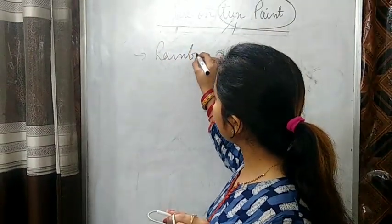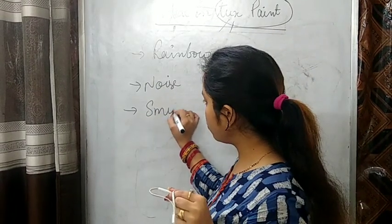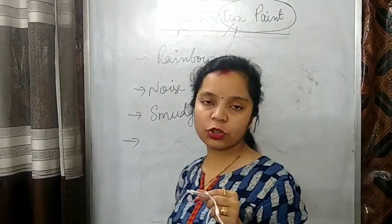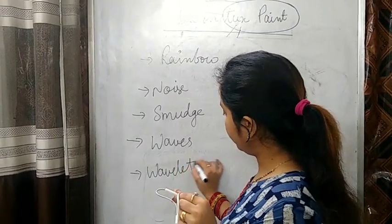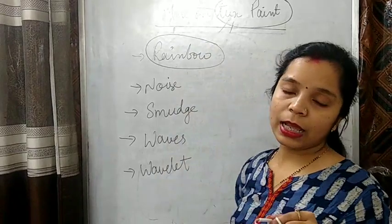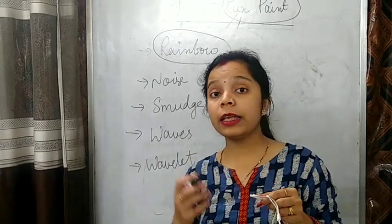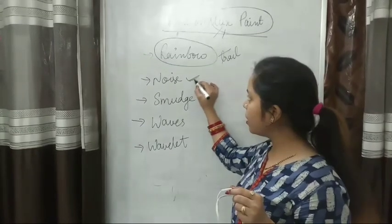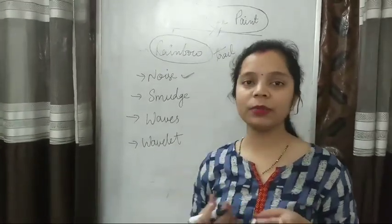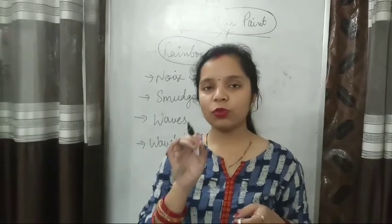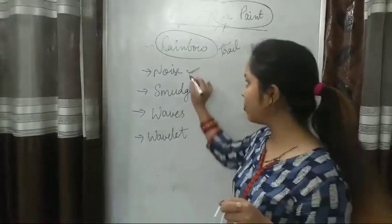Now other tools given in your book: one is rainbow tool, next one is noise tool, after that smudge tool, then waves tool, and then wavelet tool. For rainbow tool — in Tux Paint you can draw two types of rainbow: one is real rainbow drawn on the screen, and one is a trail of rainbow colors. For noise tool — you can add white or black noise in the drawing. Like you might have seen sometimes on the TV when signal is not coming, you see black and white dots — that noise effect, if you want to apply that type of effect, we use noise effect tool.